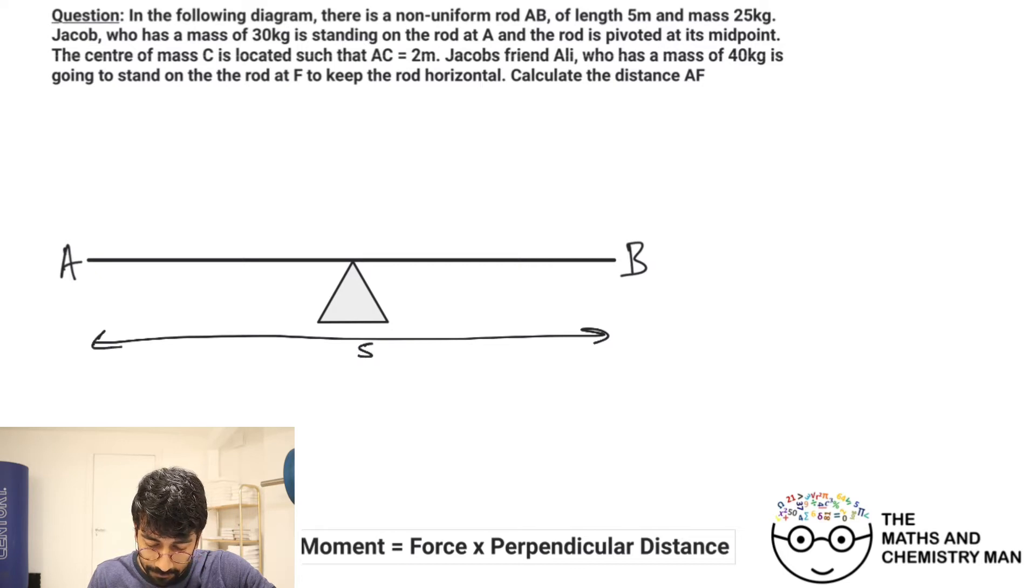We've got a non-uniform rod AB. Let's put A and B over here. It's got a length of five meters, so we'll put that whole distance there—five meters. It's got a mass of 25 kilograms. We can't put it in just yet; we don't know where it is. Now it says Jacob, who has a mass of 30 kilograms, is standing on the rod at A.